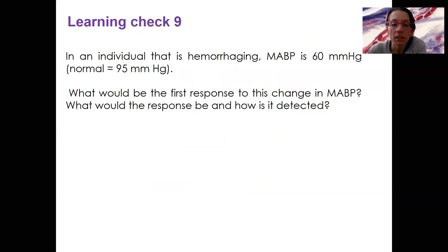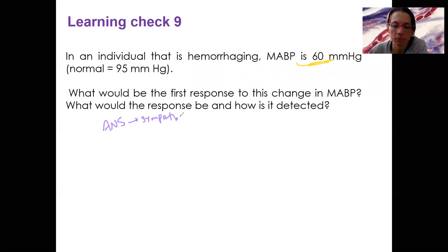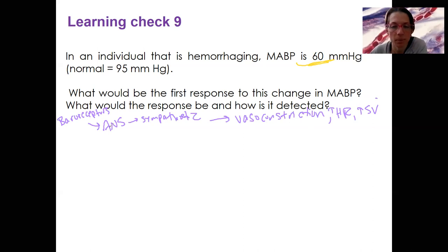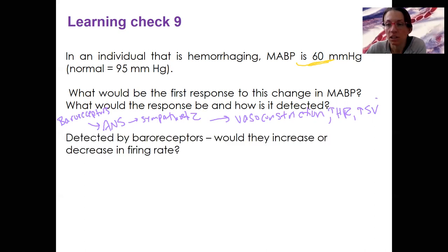Let's do a learning check. This is an individual who is hemorrhaging — bleeding out. Blood pressure is low. What will be the first response to this change? What is the response and how is it detected? The first response would be the autonomic nervous system, specifically the sympathetic division, causing vasoconstriction, heart rate increase, and stroke volume increase. This is detected by baroreceptors. Would they increase or decrease their firing rate?